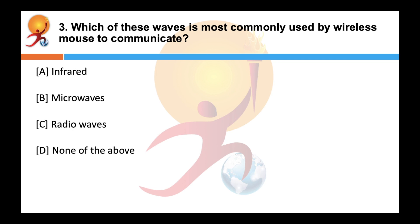Which of these waves is most commonly used by wireless mouse to communicate? Correct answer is A, infrared. Infrared waves are used for communication for very short distances. These are most commonly used in TV remotes, wireless mouse, keyboard, printer, etc.